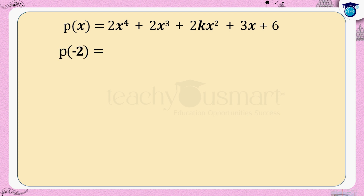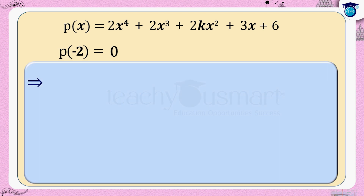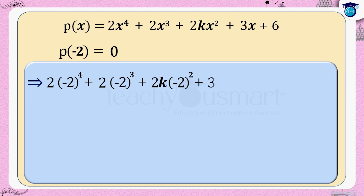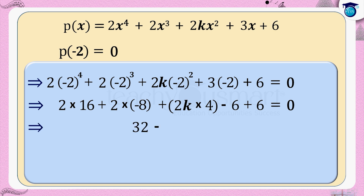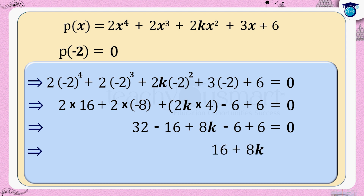This implies: 2(−2)⁴ + 2(−2)³ + 2k(−2)² + 3(−2) + 6 = 0, which gives 2 × 16 + 2 × (−8) + 2k × 4 − 6 + 6 = 0, so 32 − 16 + 8k + 0 = 0, which means 16 + 8k = 0.